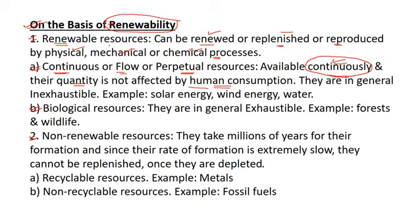For example, solar energy, wind energy, water, etc. No matter how much solar energy we use, it will never get exhausted. Solar energy is continuously available and its quantity is not affected by human consumption. It is a renewable source of energy because nature itself renews it. These continuous or flow resources are in general inexhaustible.